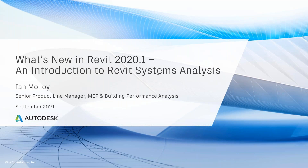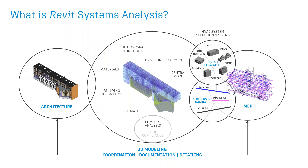In terms of what Revit Systems Analysis is, from a Revit context — whether architecture or MEP modeling — it's essentially a 3D modeling tool. The main use case is 3D coordination: does the stuff actually fit in the building? And then production of documents. More recently, we've invested in the ability to use it for detailing, estimation, and fabrication. But it's mostly all about 3D modeling and 3D geometry.